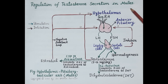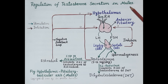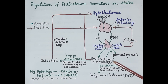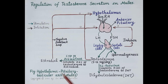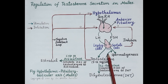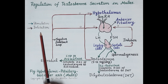Hello students. As we all know, testosterone is the principal androgen in men. In today's video, we will try to understand the regulation of testosterone secretion in males, discuss the hypothalamic-pituitary-testicular axis, and also discuss the role of the negative feedback loop that controls the secretion of testosterone from the testes.